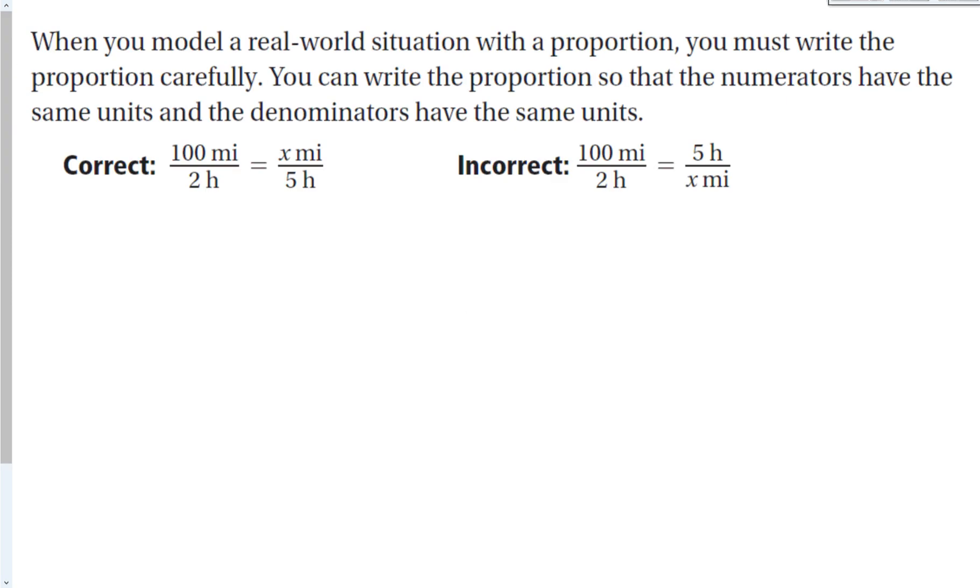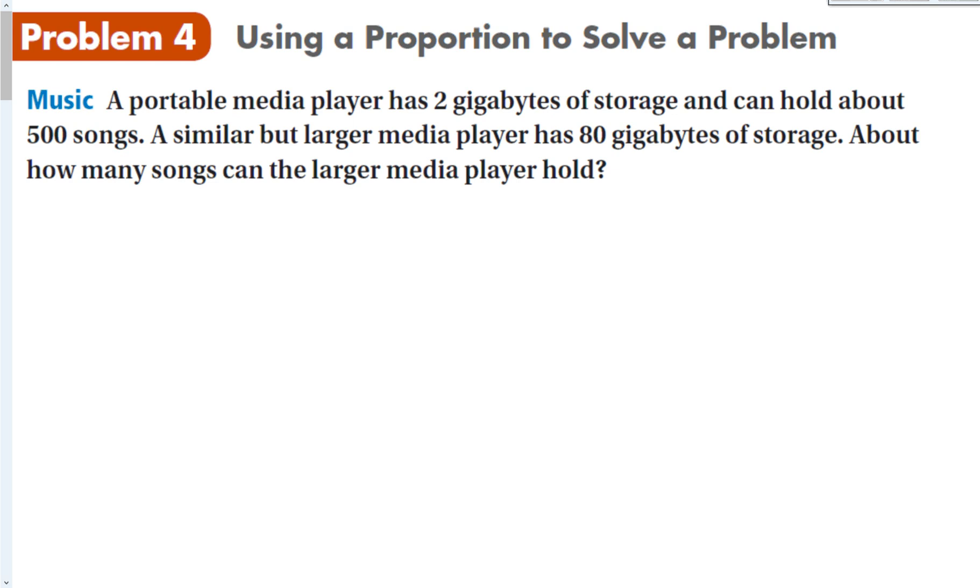When we model real world situations, which is really where proportions are used most often, we must write the proportion very carefully. You can write the proportion so that the numerators have the same units and the denominators have the same units. Notice this one's correct: miles, miles, hours, hours. This one is not correct: miles, hours, hours, miles. The stuff in the numerator has to match the stuff in the denominator. The stuff on the top has to match the stuff on the bottom. That's a way to check yourself when you are actually setting up the proportion.